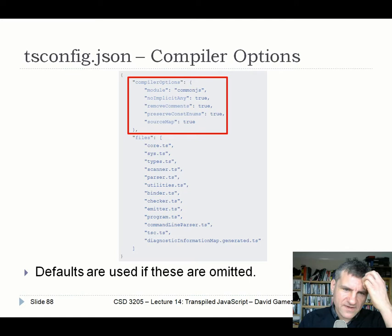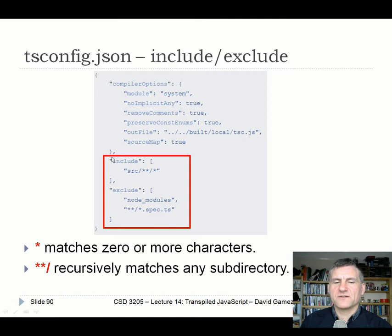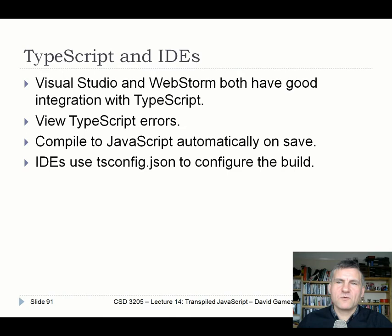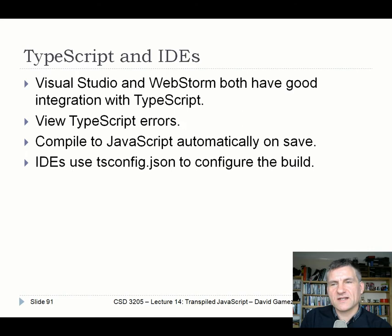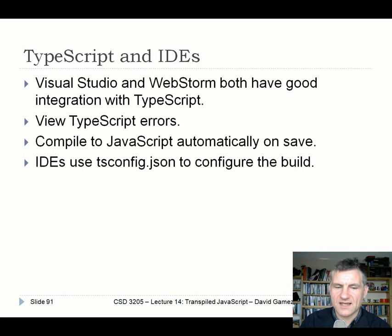tsconfig typically has compiler options specifying the target language and other settings. You can specify a list of files, or better, use include and exclude to specify directories you want to transpile, like source directories. IDEs like Visual Studio and WebStorm have very good integration with TypeScript — they let you view TypeScript errors, compile JavaScript automatically on save, or display errors dynamically as you edit code without saving. These IDEs use tsconfig.json to configure the build.